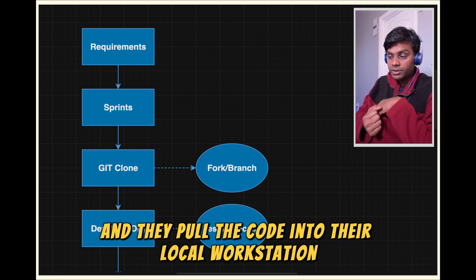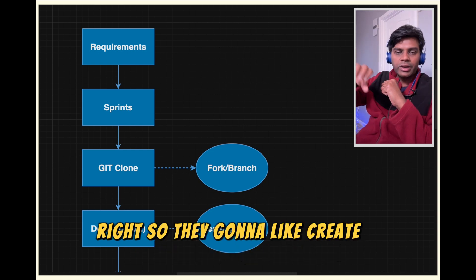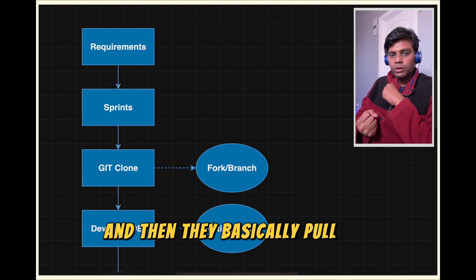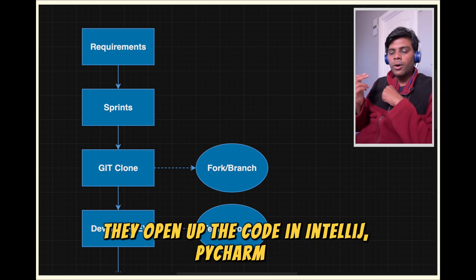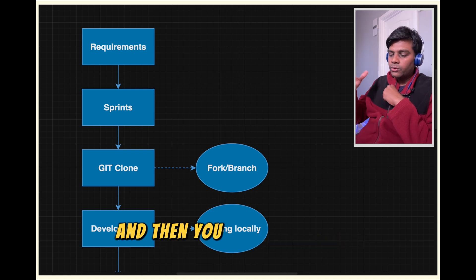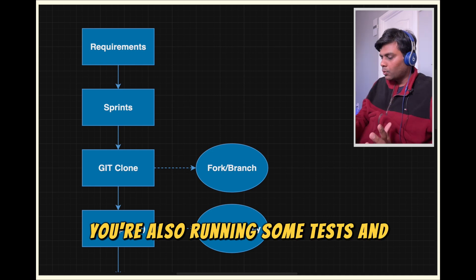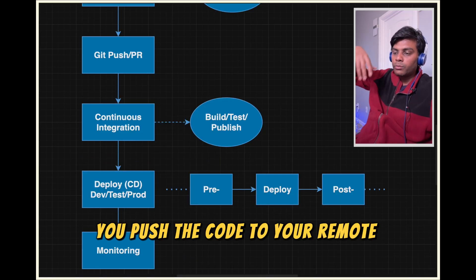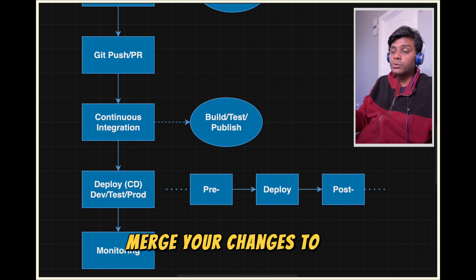The software engineer isn't going to work on the main branch of the repo. They'll create a fork or maybe a feature branch, pull the code, and open it up in IntelliJ, PyCharm, or VS Code — the IDE of their choice. They start developing, making changes, and also running some tests. Once they're ready, they push the code to the remote repository.